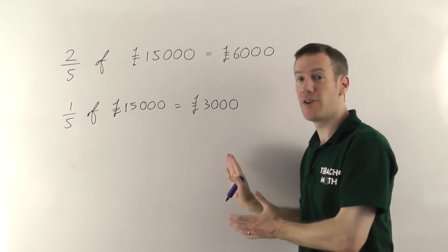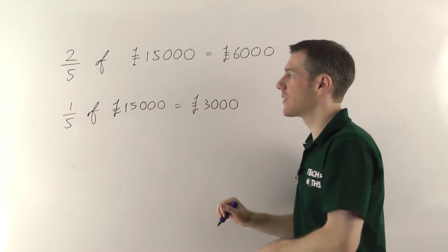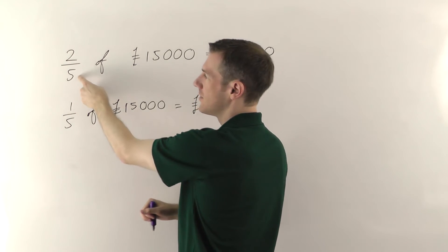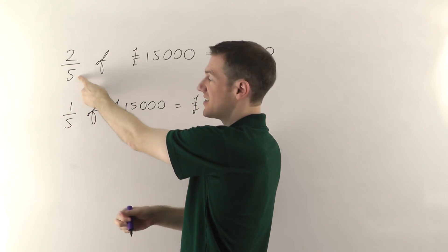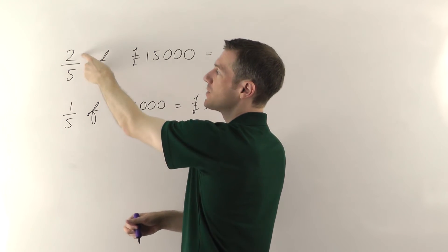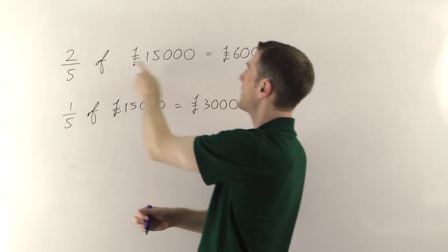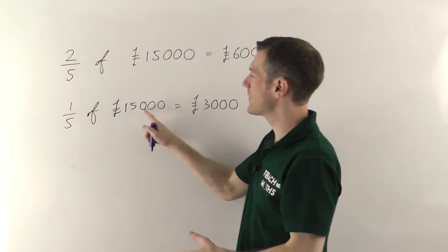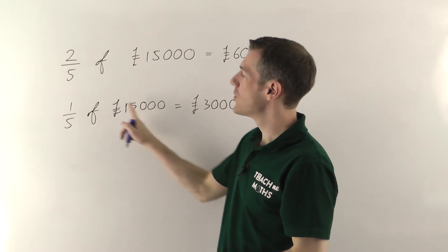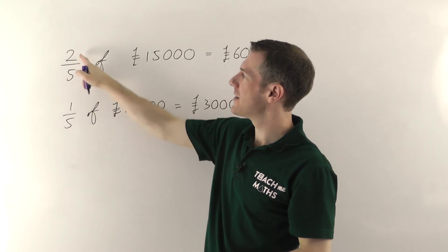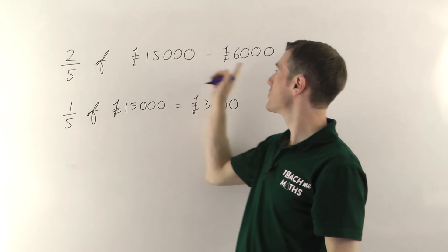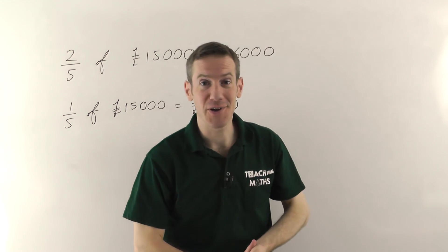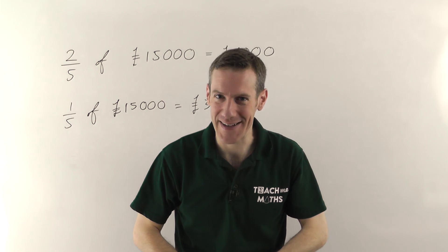Some people prefer to think about it that way. Whatever fraction you've got, find out what 1 of those parts is — in this case 1 fifth — and then multiply by the numerator to get the answer. But essentially you're doing the same thing as before: starting with 15,000, dividing by 5, and then multiplying by 2 gives you 6,000. My name is Jonathan Hicks and you're watching Teach Me Maths.